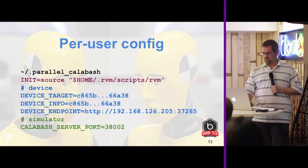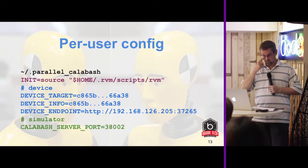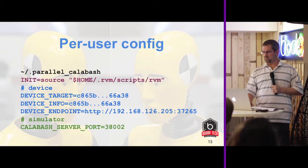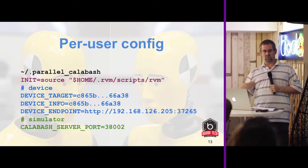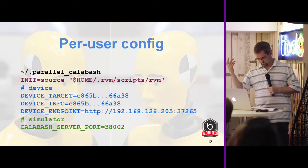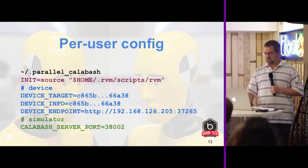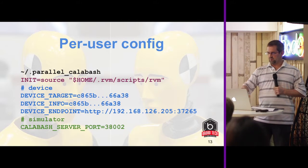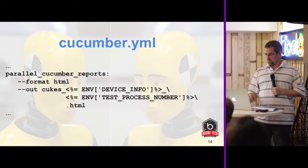The .parallelcalabash file looks like this. You can specify an initialization line if you need to do some environmental control — this is just setting up Ruby. If you're working with a device, you can set the UUID and the endpoint with the IP address specific to the phone. There's no way of finding out from the phone what its IP address is because Apple. If you're working on a simulator, you just need to tell it which port you're using, because the server IP address is always localhost. You do one or the other — you don't do both device and simulator, otherwise things go horribly wrong.